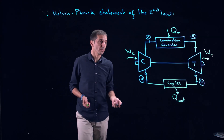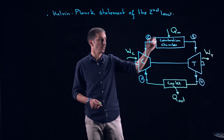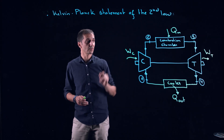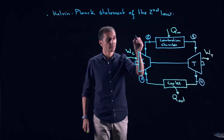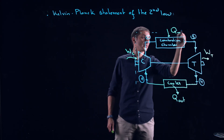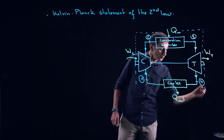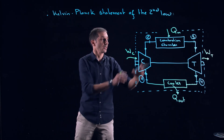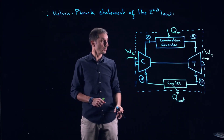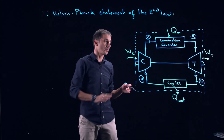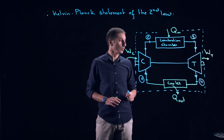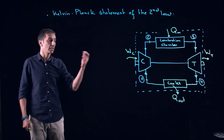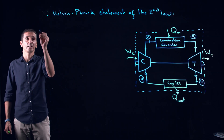Now what we know is that each component or device in the cycle is an open system. For example, a compressor is an open system with inlet one and exit two. But if we take all the cycle as a system, we can see that there is no mass crossing the boundaries of the system — everything is inside. There is only energy crossing the boundaries: work in from the compressor, work out from the turbine, Q in at the combustion chamber, and Q out at the cooler. So we can treat this as a closed system.